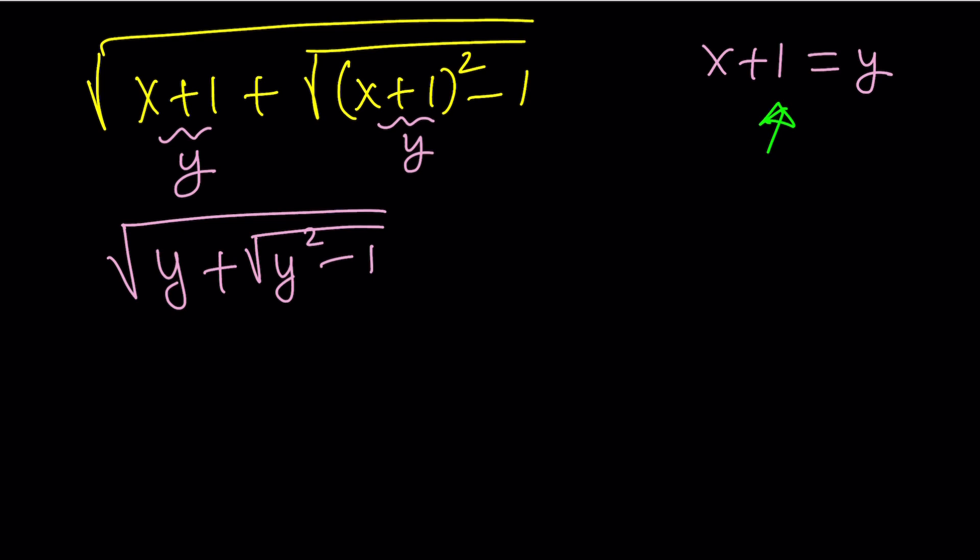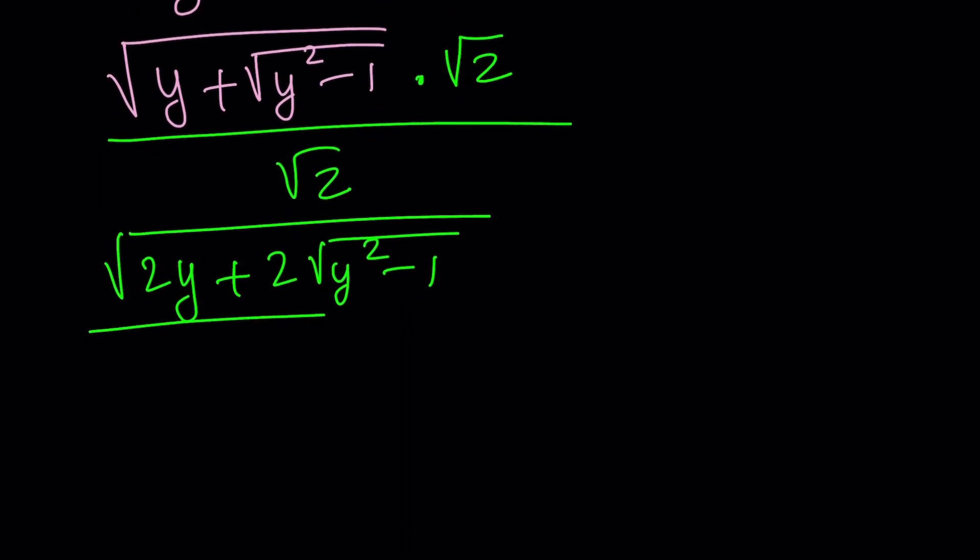Obviously, there's more than one way to do it. But the method that I'm about to use involves multiplying this by square root of 2 and dividing by the same thing because that wouldn't change it, right? Original problem, but it will help. If you distribute the 2, you're going to get 2y plus 2 times the square root of y squared minus 1 inside the radical, and then that is divided by the square root of 2. We'll take care of that square root of 2 at the end.